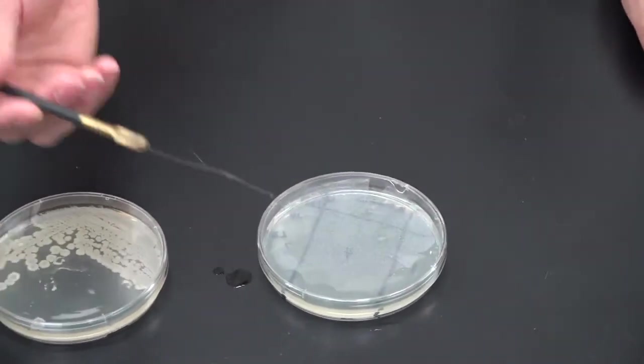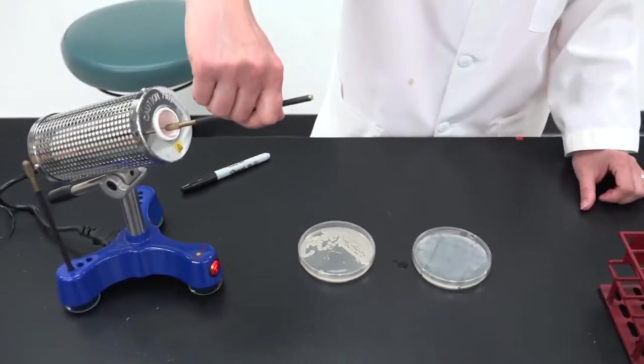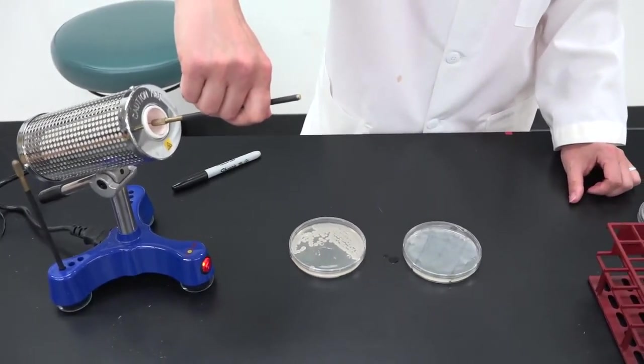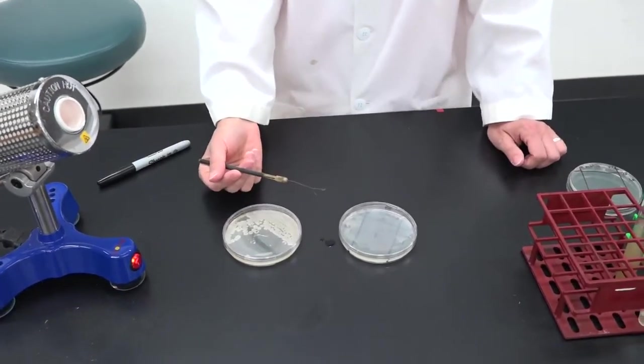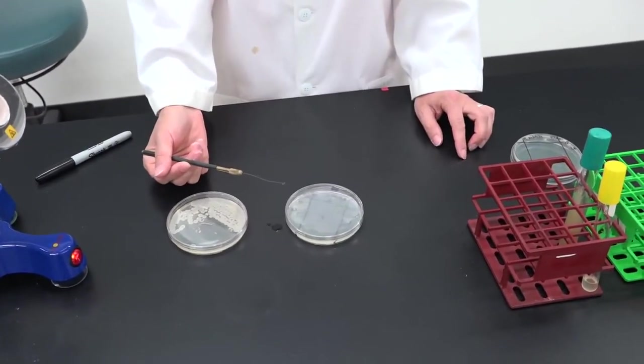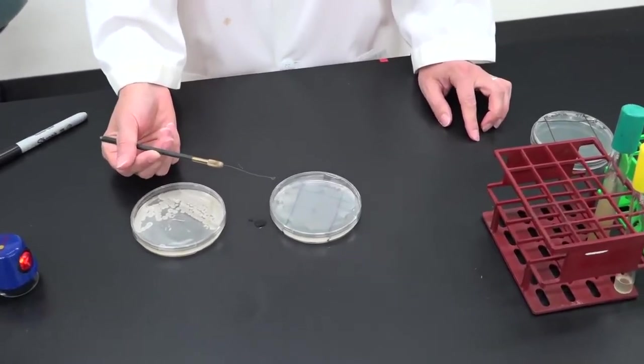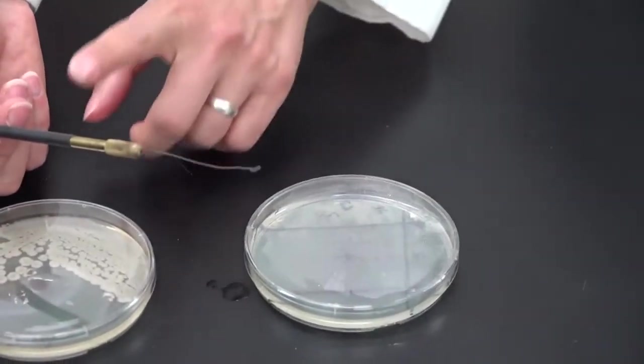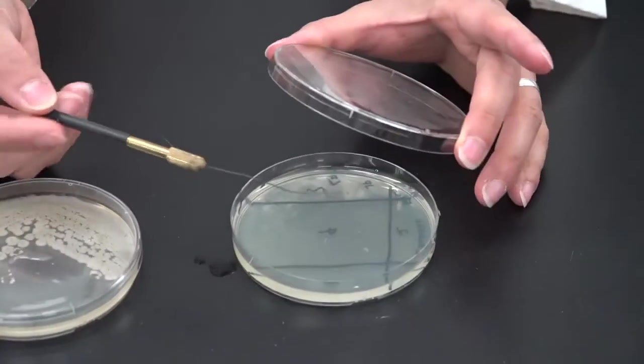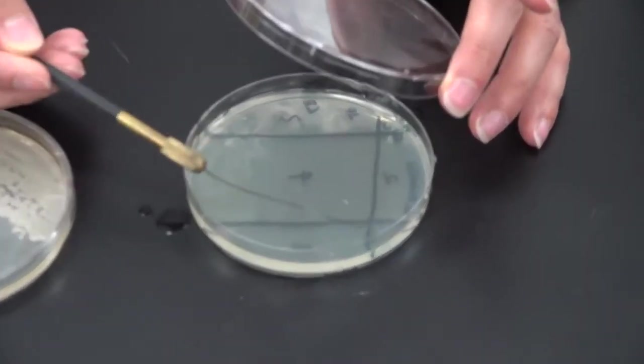Then you need to re-sterilize your loop. Remember to let it cool for a few seconds before you touch the plate, otherwise you'll sizzle the bacteria. Now, without getting any new bacteria, you're going to streak from one through two.